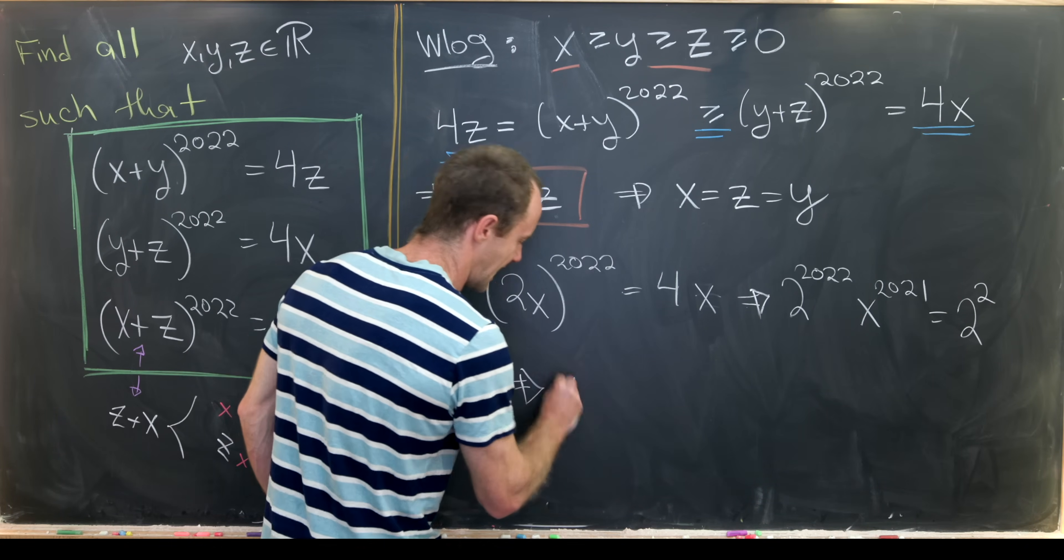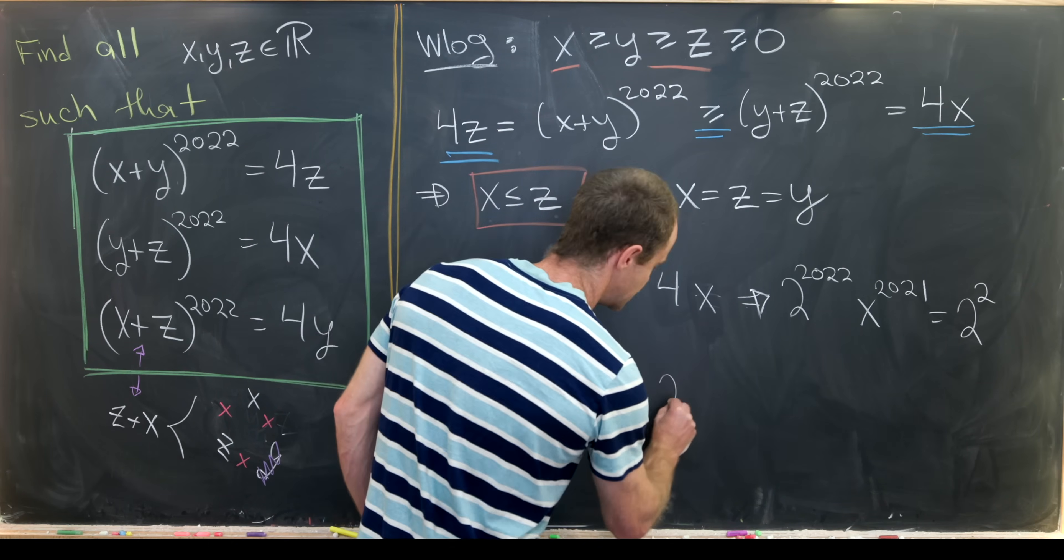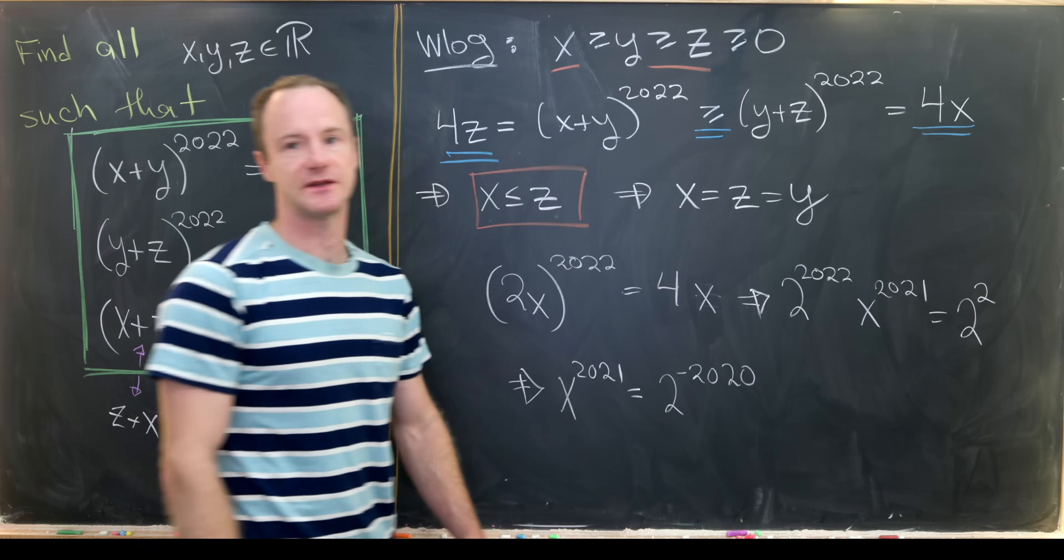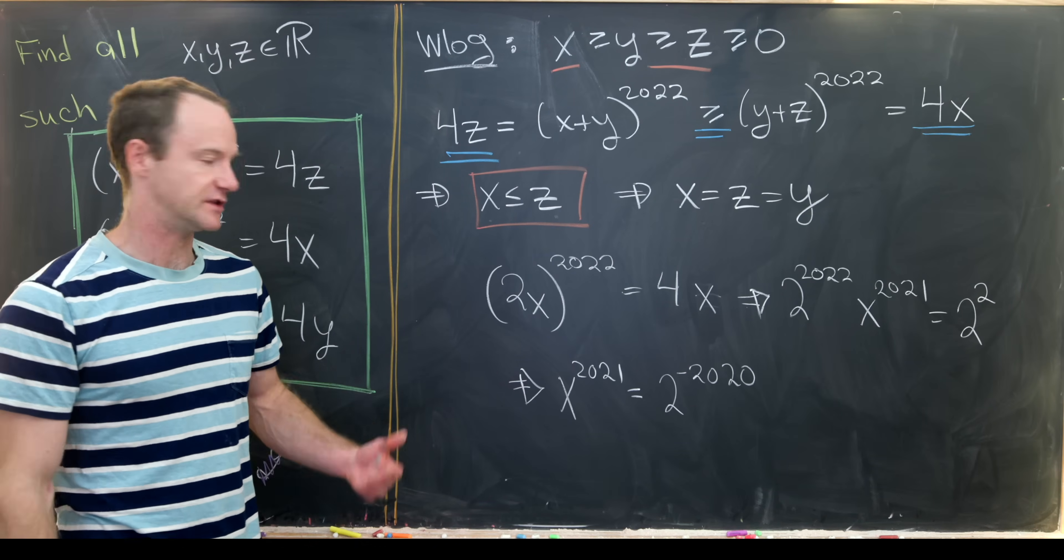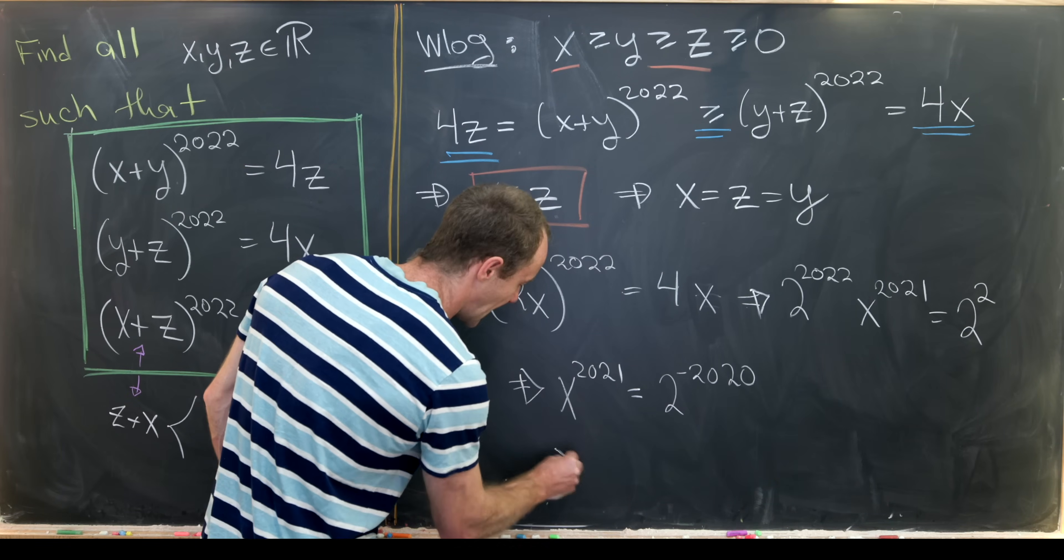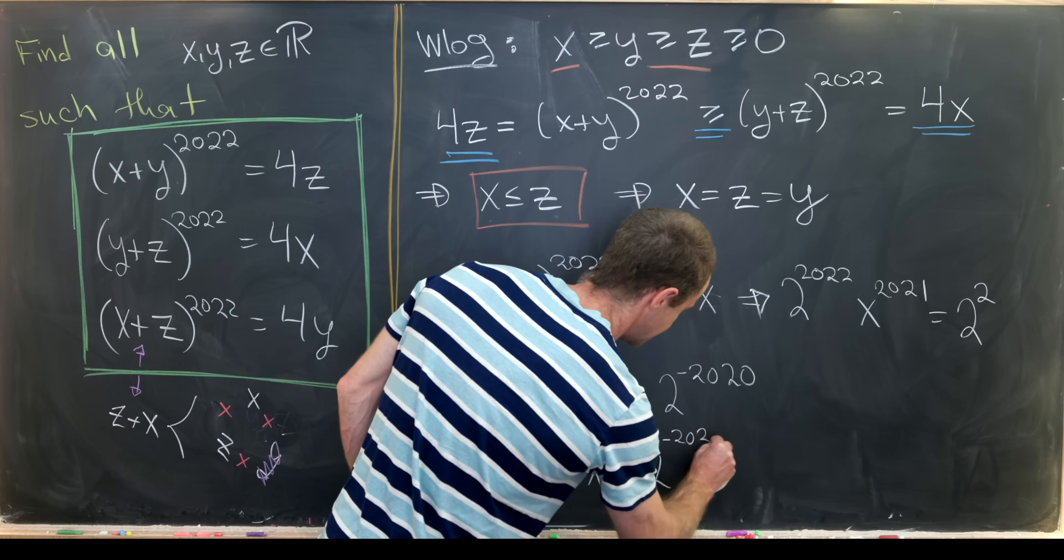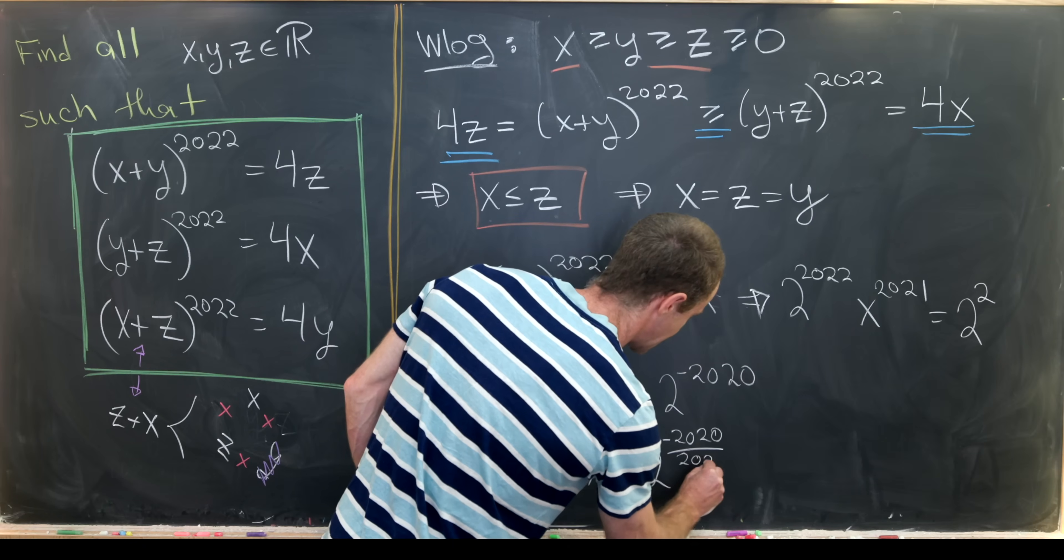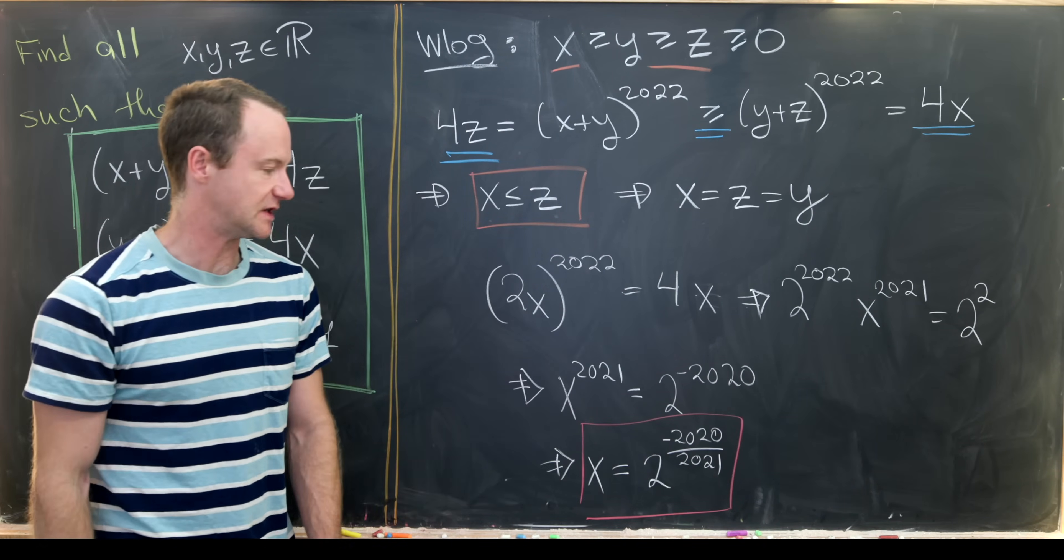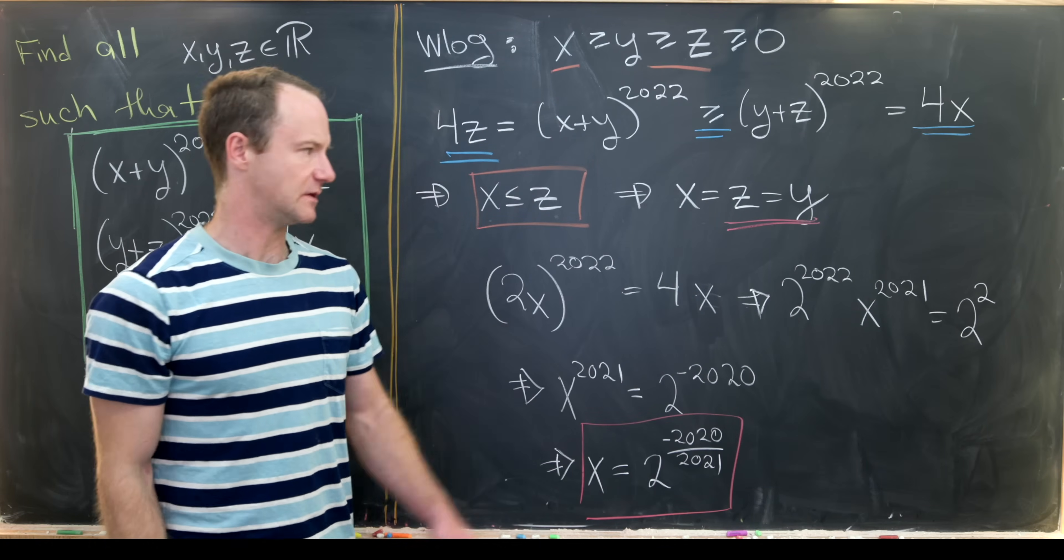That tells me that x^2021 = 2^(-2020). Maybe you would write that as 1/2^2020, but I think that's really neither here nor there. So finally, we'll get x = 2^(-2020/2021). And then since x must be equal to y must be equal to z, that means that these are also the values of y and z by what we did before.